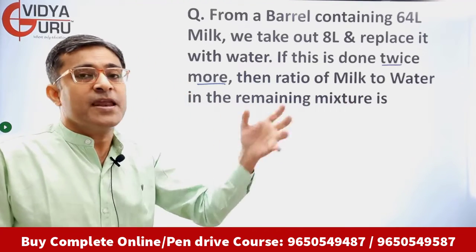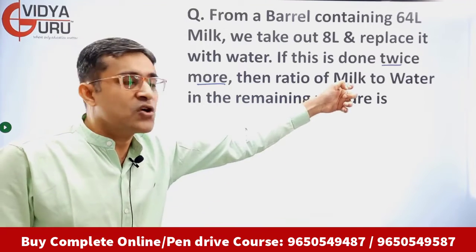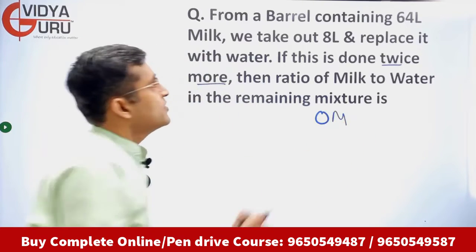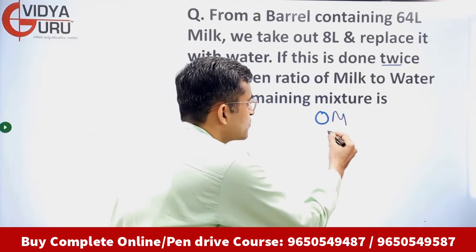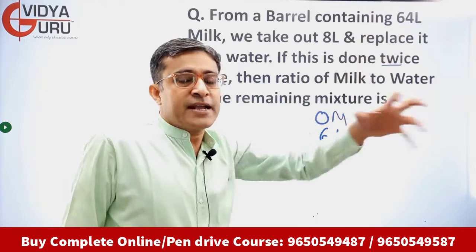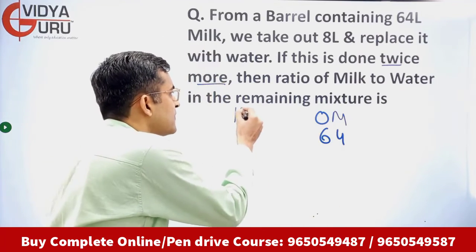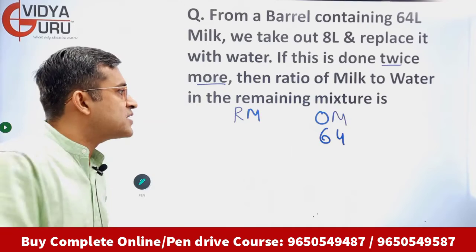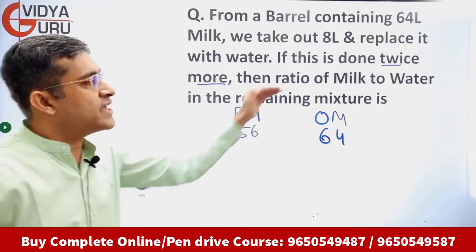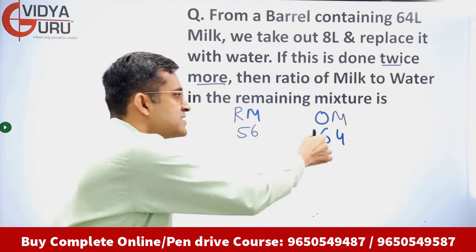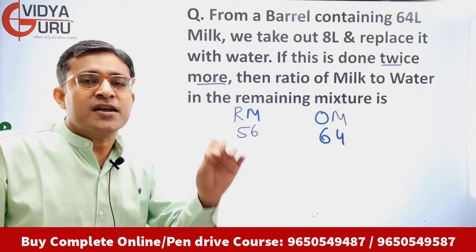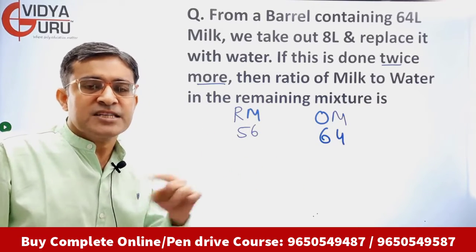We have to find the ratio of milk remaining to water in the mixture. The original milk is 64 liters. We take out 8 liters and replace it with water. After the first operation, 56 liters of milk remain because 8 liters have been taken out and water has been added.